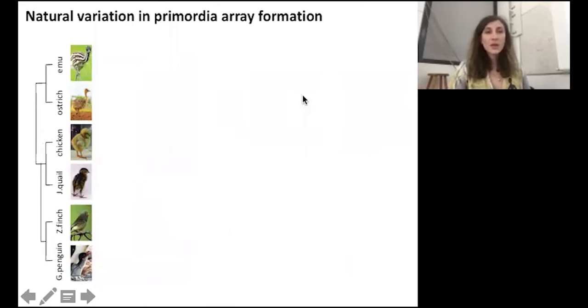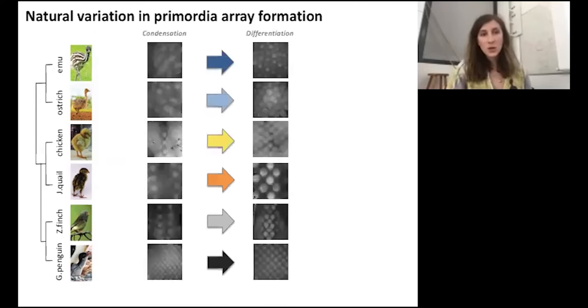We start by describing the natural variation in pattern fidelity among the three major groups of birds at two developmental stages, when the primordia just appeared and when they are about to differentiate. And we found two major categories of birds. The first one which is composed of the chicken, the quail, and the zebra finch, in which feather primordia arose along a line, and the second is composed of the emu, the ostrich, and the penguin, in which feather primordia appeared across a portion of skin.